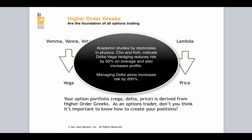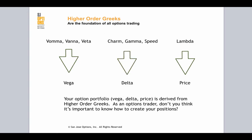The last thing I want to say is that when you're managing that portfolio by your first level Greeks — your Vega and your delta — these are really your surface Greeks. It's very similar to treating a symptom instead of actually treating the problem that's causing the symptom.